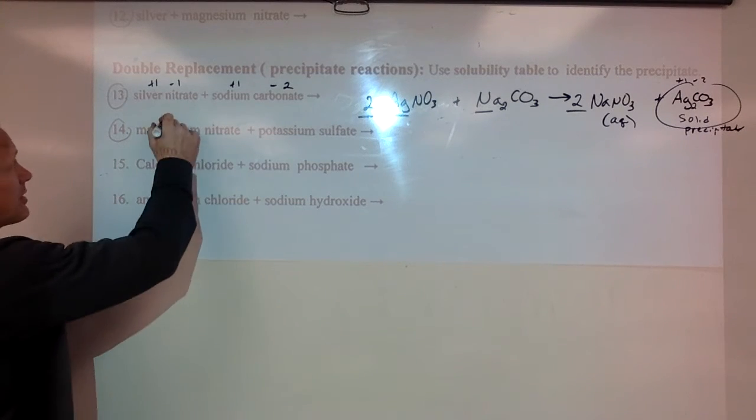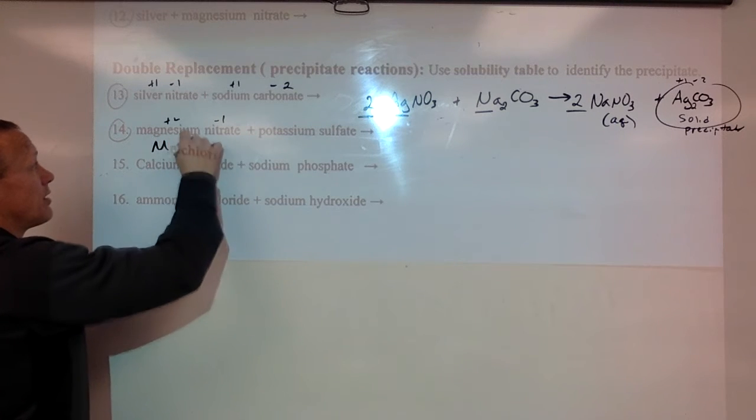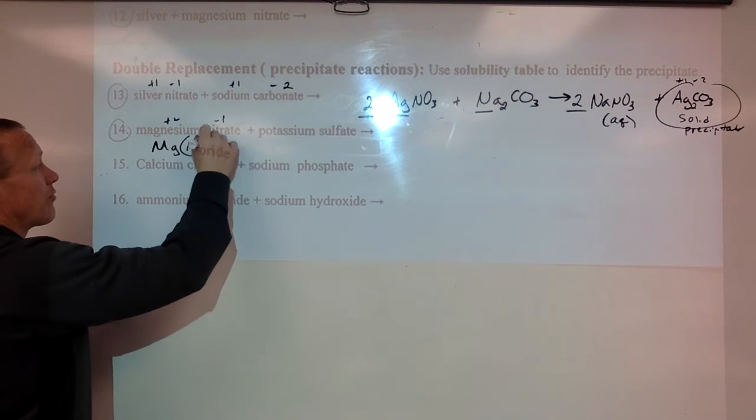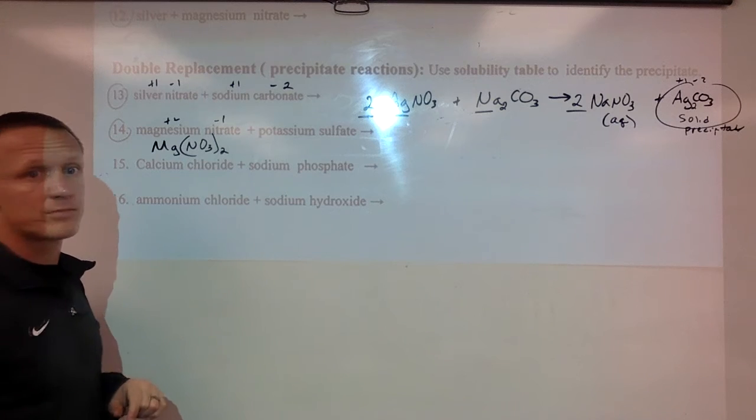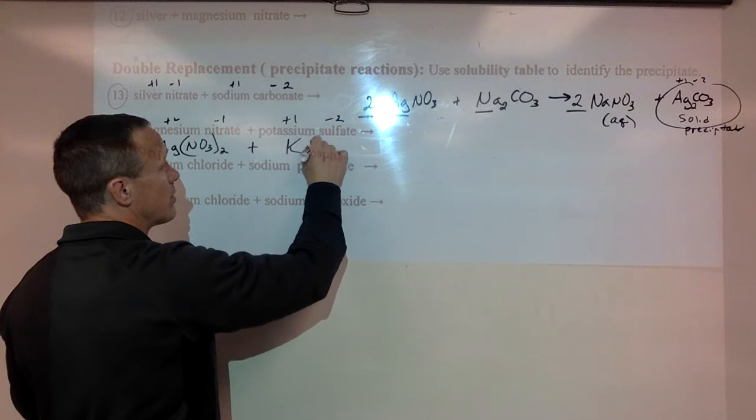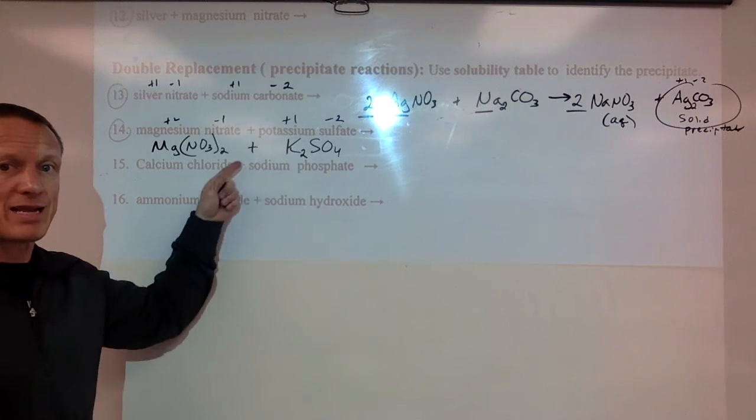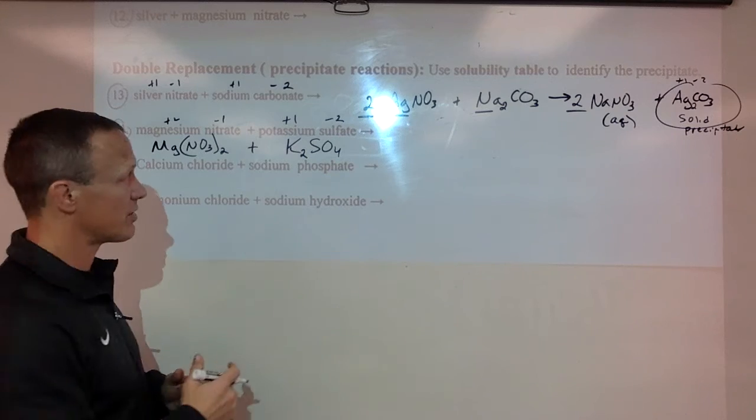Next one we have magnesium nitrate. Magnesium is a plus two. Nitrate is a minus one. So you're going to have Mg(NO3)2. Plus potassium is a plus one. Sulfate is a minus two. So we have two there. Again both of these things would be aqueous. They would be dissolved in water. That's how double replacements happen.